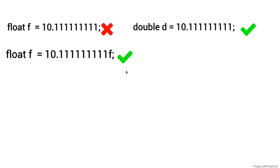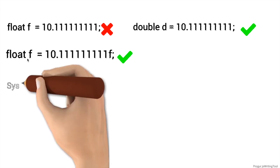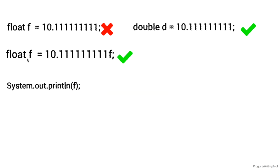There's another very interesting thing to know about float and double, and you can differentiate both. If I want to print a value to the output console in Java, I use System.out.println and put the variable inside the parentheses. If you don't understand what System.out.println means, just remember for now that it's used to print something to the output console — we'll cover that in detail later.